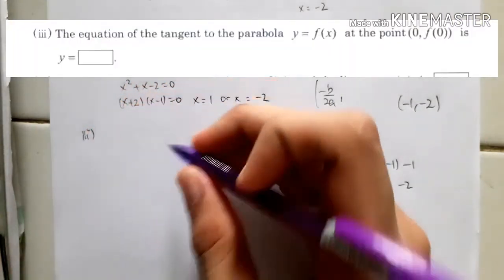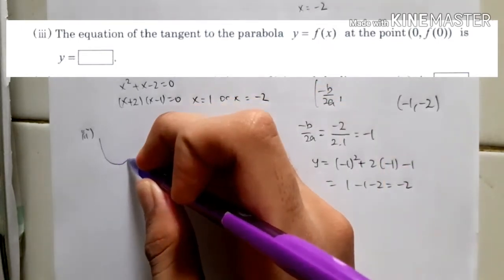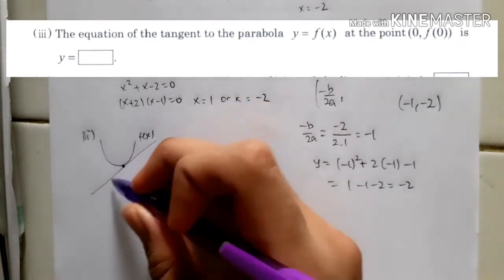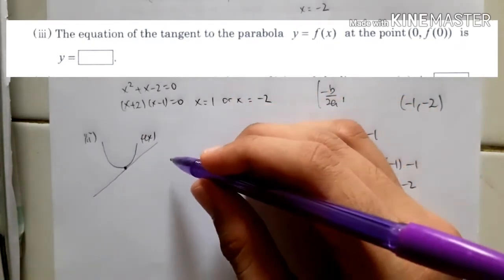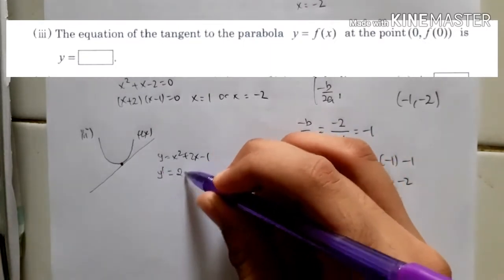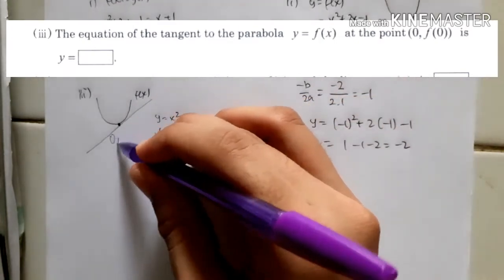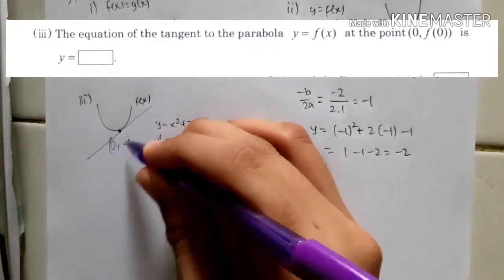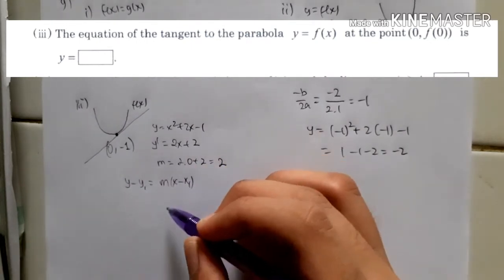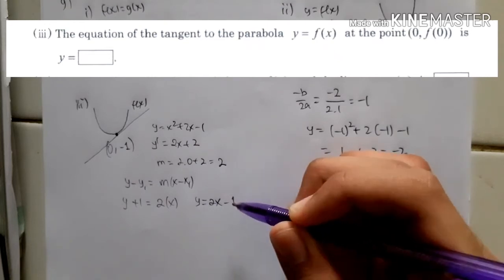For part 3, find the equation of the tangent to the parabola y equals f(x) at the point (0, f(0)). We differentiate y equals x squared plus 2x minus 1 to get dy/dx equals 2x plus 2. The gradient at x equals 0 is 2 times 0 plus 2, which is 2. The point is (0, −1), so using y minus y1 equals m(x minus x1): y plus 1 equals 2x, giving y equals 2x minus 1.